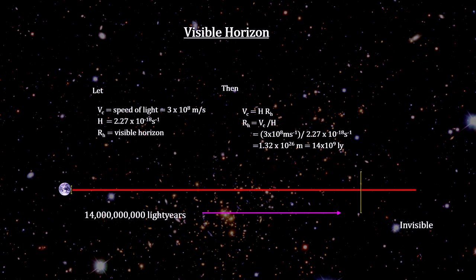Plugging in the numbers, we find that all galaxies beyond 14 billion light years could never be seen here. GNZ-11 is now 32 billion light years away, so the light that is leaving GNZ-11 now will never reach us.